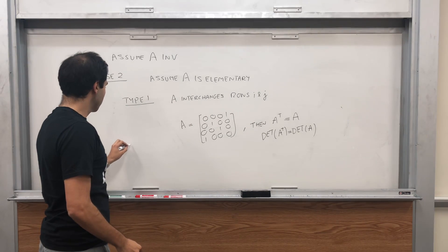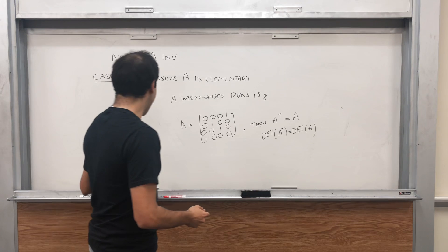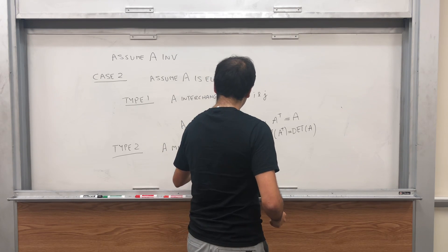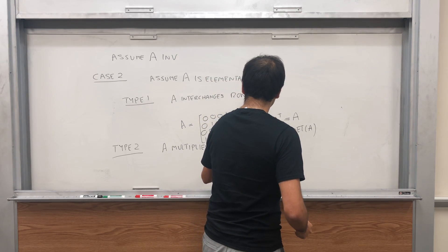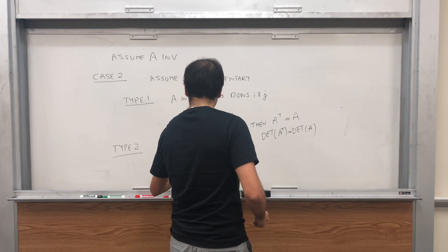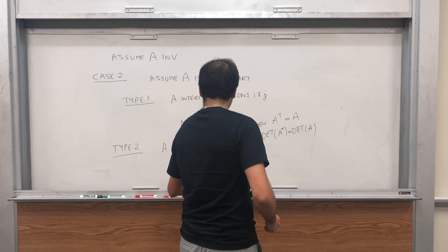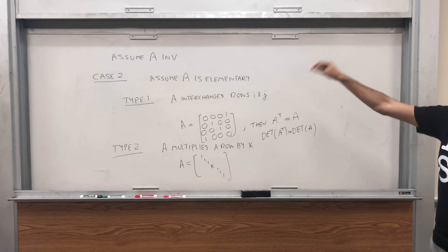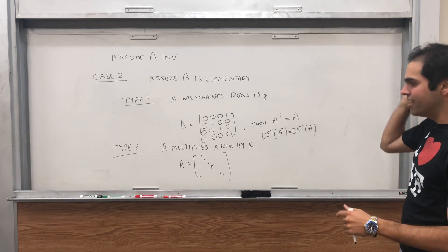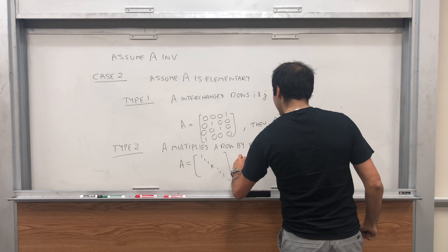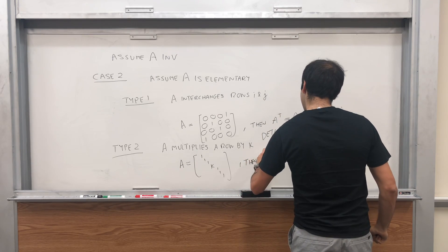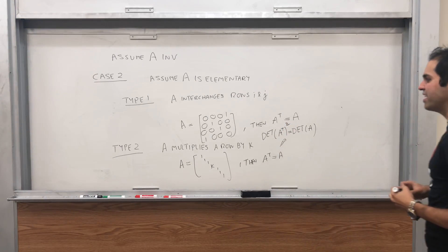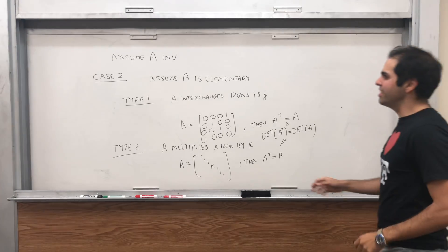Type 2: suppose A multiplies a row by K. Then A looks like the identity except the (k,k) entry is K. In this case, we also have A transpose equals A. So it's also true that the determinant of A transpose equals the determinant of A, which in this case is K.